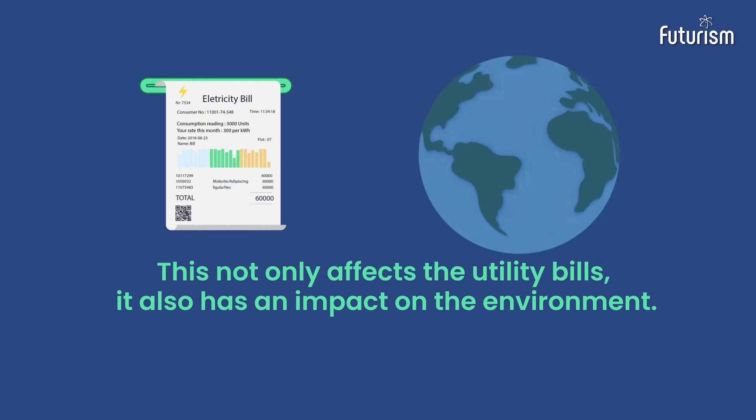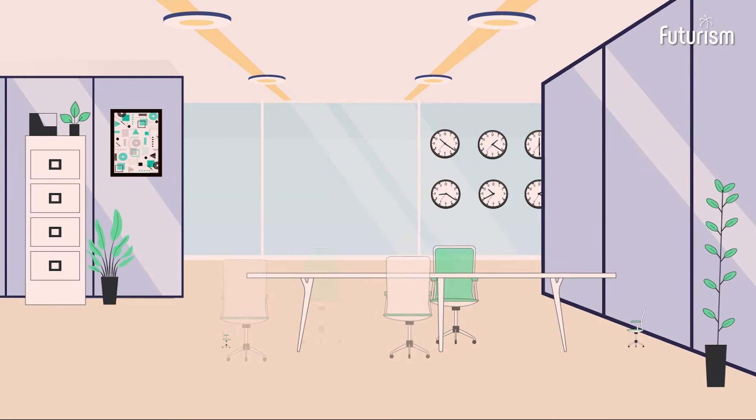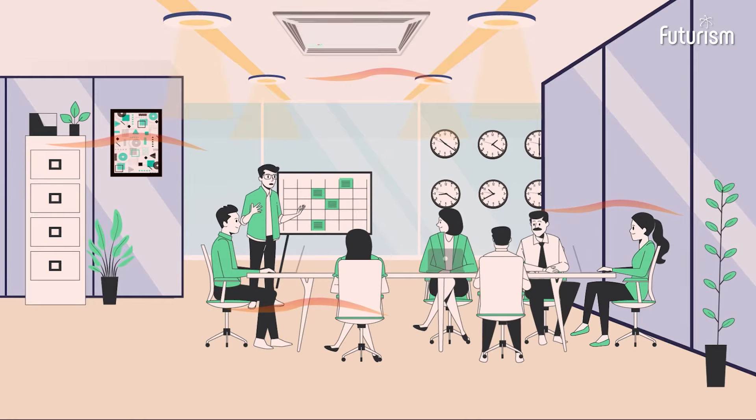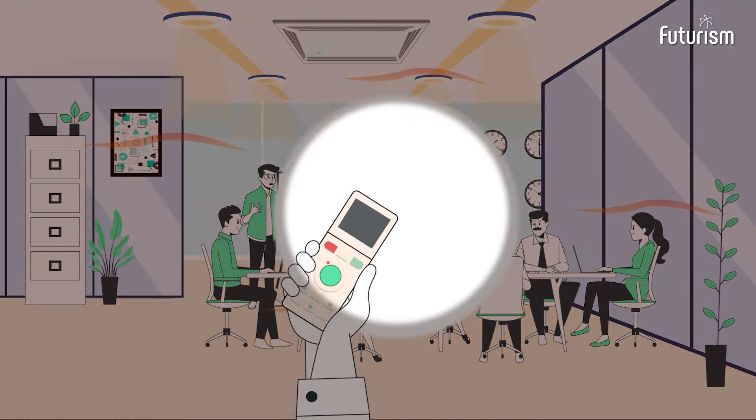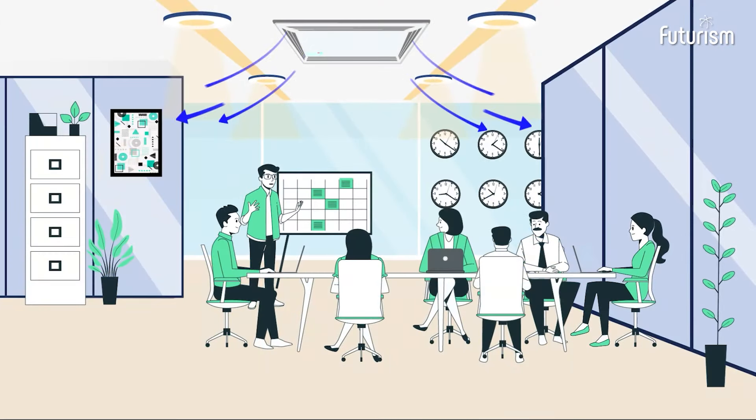This not only affects utility bills, it also has an impact on the environment. Take this as an example: a group of people enters a meeting room. They manually turn on the air conditioning and lights for an hour-long meeting. Once the meeting concludes,